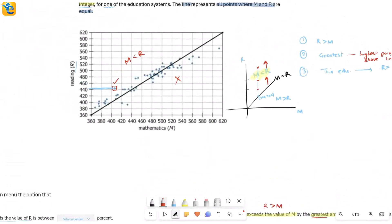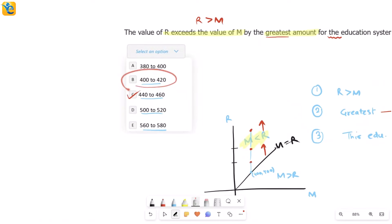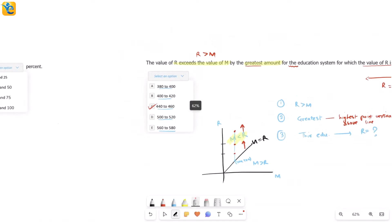Now as you're doing this, be very careful you don't accidentally read the mathematics value because if you read M, it'll be 400 to 420. And that is also a choice. So you lose your focus and you definitely will have a choice to mark. So be careful. We're done. Let's now summarize this.